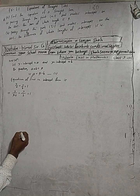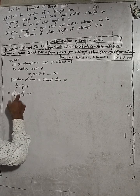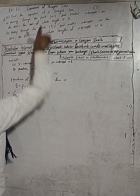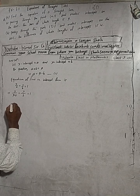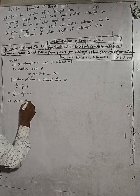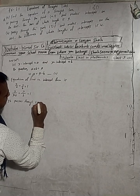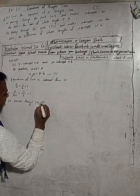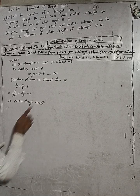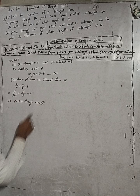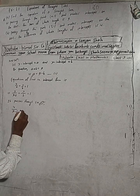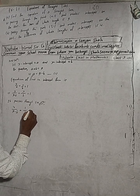Since this line passes through the point (4, 1), we substitute x = 4 and y = 1 into the equation. This gives us 4/(9 - b) + 1/b = 1. Now we solve this equation.